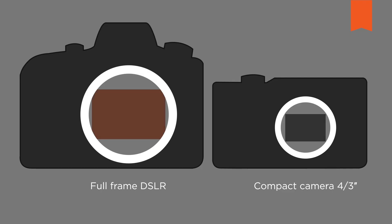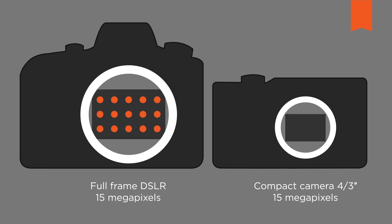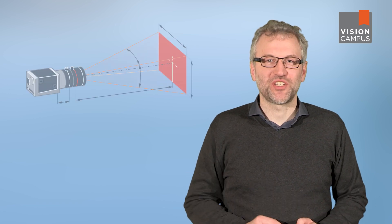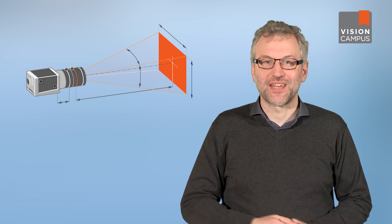Imagine the DSLR camera with a large sensor and the compact camera with a smaller sensor both having a resolution of 15 megapixels. If the sensor size is not enlarged, the pixels on the compact camera's sensor must be smaller to achieve the same resolution. But if there are too many pixels on the sensor surface, you also get higher noise and less sensitivity to light, which has a negative effect on image quality. The actual resolution is always determined by the interaction between sensor, lens, and distance to the object.